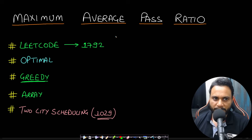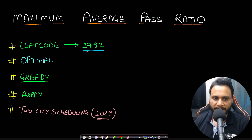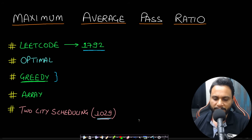Hello guys, welcome back to Take Dose. In this video we will look at the Maximum Average Pass Ratio problem, which is LeetCode number 1792, based on a greedy algorithm. A very similar problem is LeetCode number 1029, Two City Scheduling — these two problems are very similar.